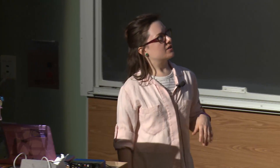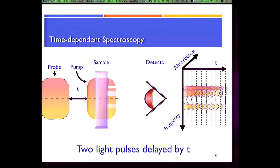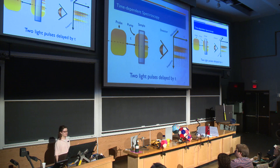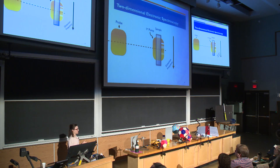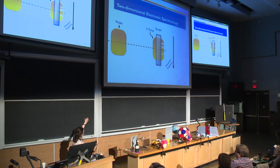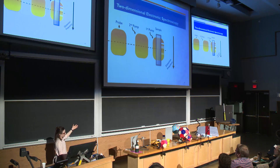Back to our time-dependent spectroscopy. Now we've got the broadband spectra that we need and the short time resolution that we need. But this type of spectroscopy still leaves a lot of ambiguity in these systems that have a lot of different states. So instead we use a type of spectroscopy called two-dimensional electronic spectroscopy. It's very similar to the previous time-resolved spectroscopy — we've got a pump and a probe — except that we introduce a second pump, and we still scan this time delay t, which allows us to watch how the system is evolving with time.